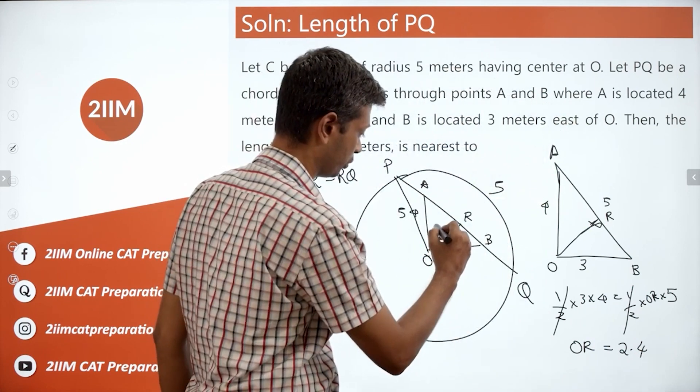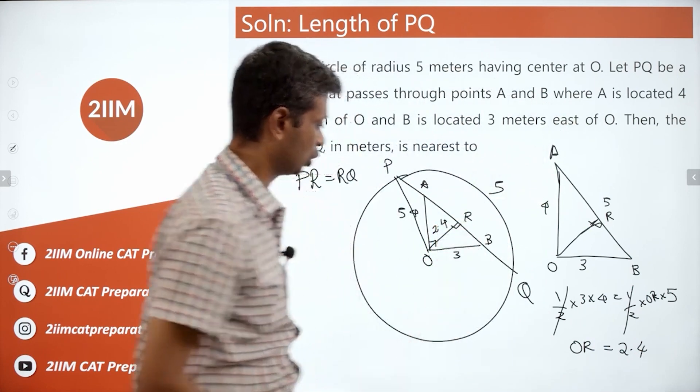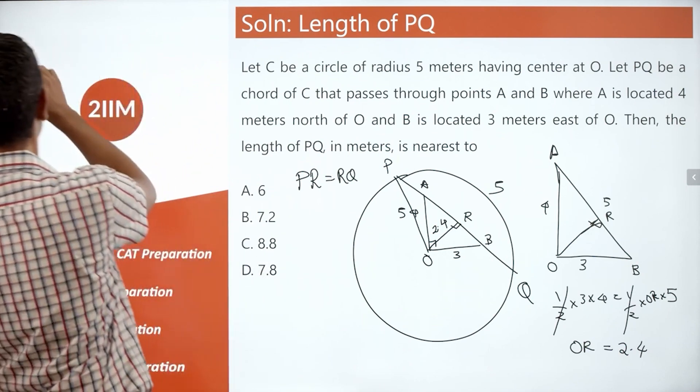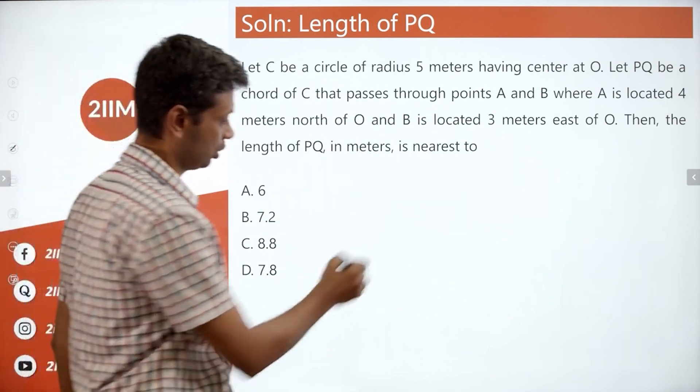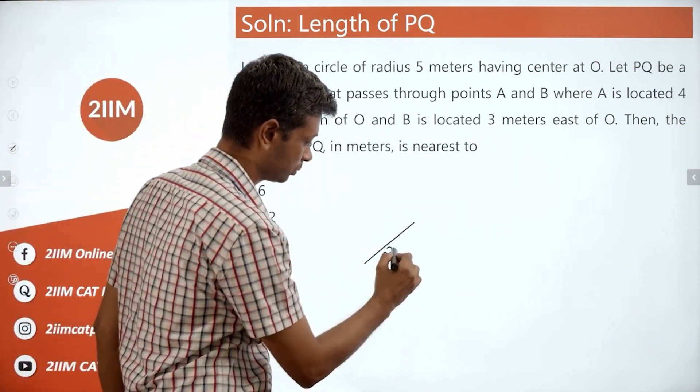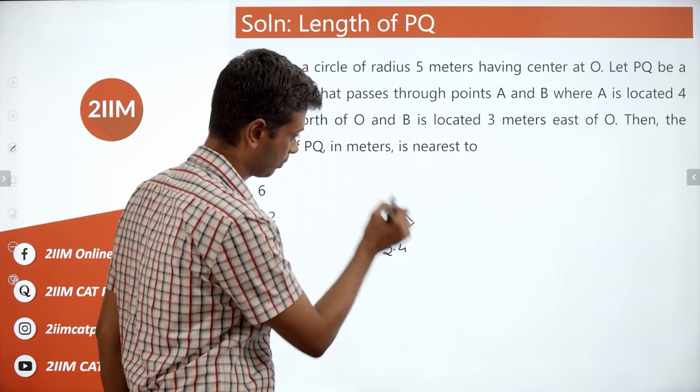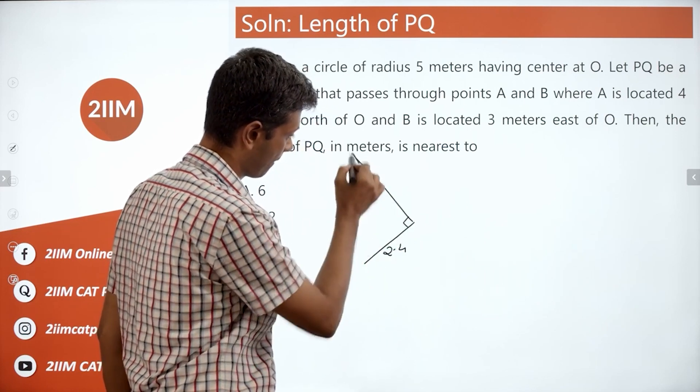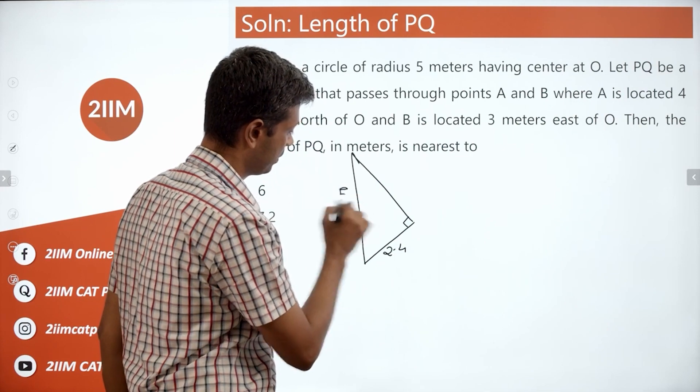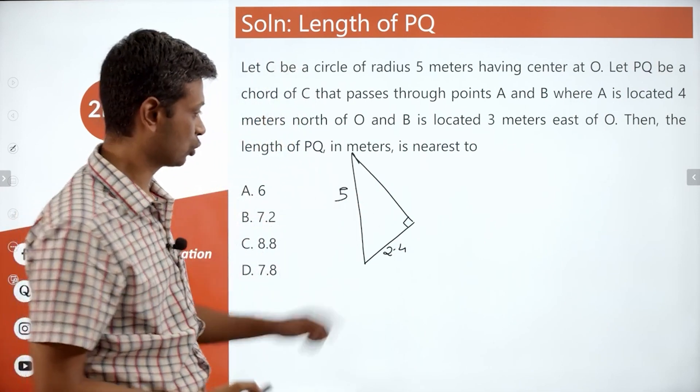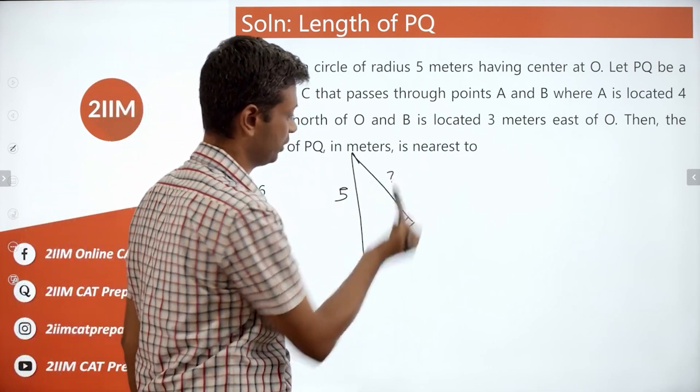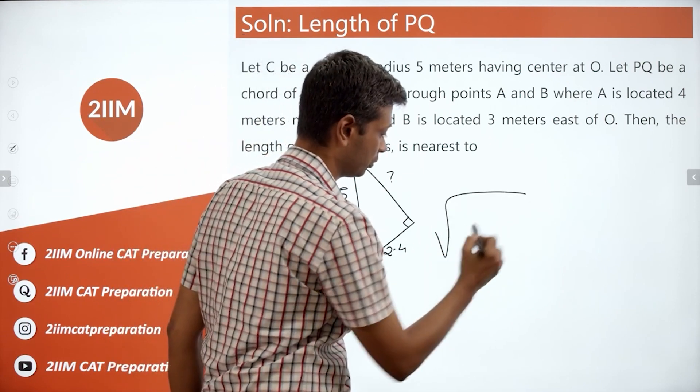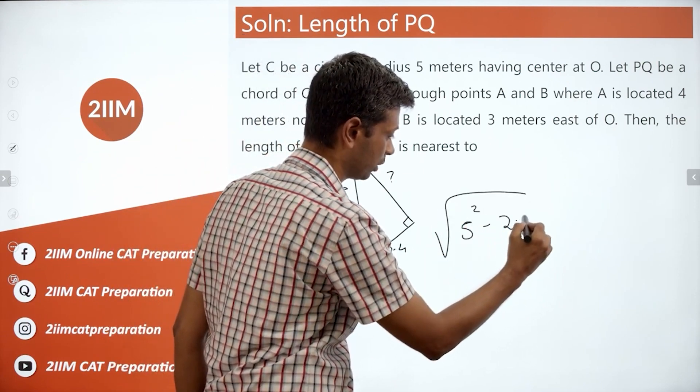So this measures 2.4. Now what do we do? I am going to go to the next slide and draw just that part that I want to draw. OR is 2.4. Radius is 5. This is 2.4. This part is what we need to find.